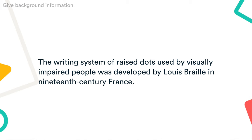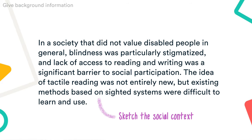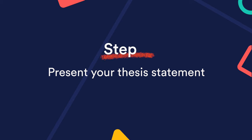In our braille example, we first introduce the topic: 'The writing system of raised dots used by visually impaired people was developed by Louis Braille in 19th century France.' Then we sketch the social context: 'In a society that did not value disabled people in general, blindness was particularly stigmatized, and lack of access to reading and writing was a significant barrier to social participation. The idea of tactile reading was not entirely new, but existing methods based on sighted systems were difficult to learn and use.'